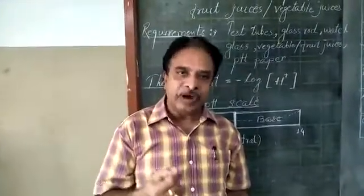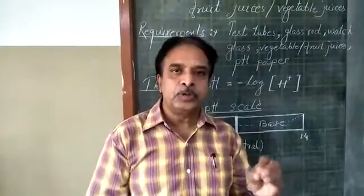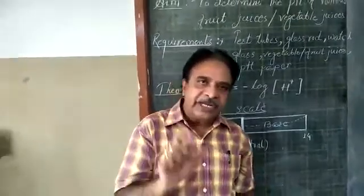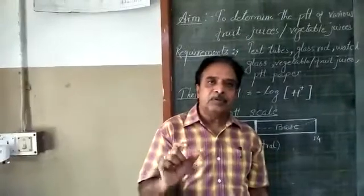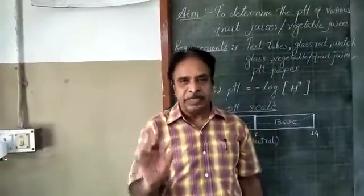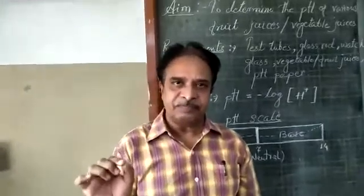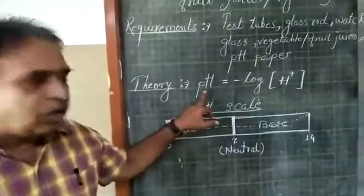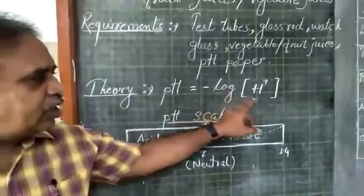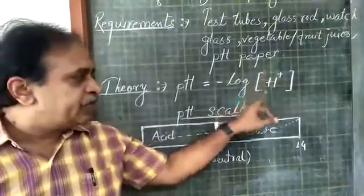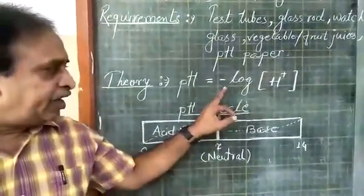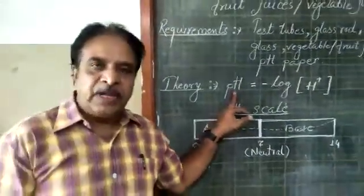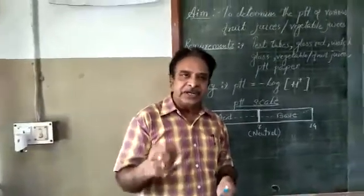To find that, we are going to use one simple test called the pH test. pH is the word taken from the Latin term 'potens dehydrogen', meaning the power of hydrogen ion concentration. It was introduced by P.L. Sorenson, and the pH formula is: pH = -log[H⁺], which we define as the negative logarithm of hydrogen ion concentration.